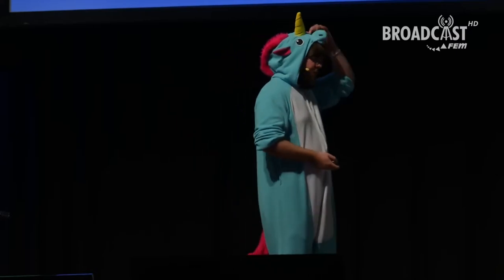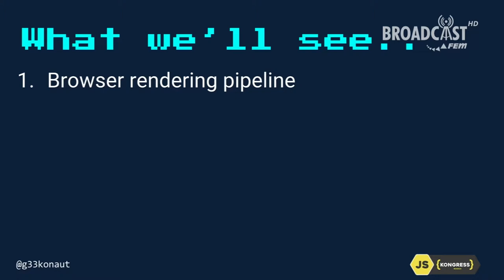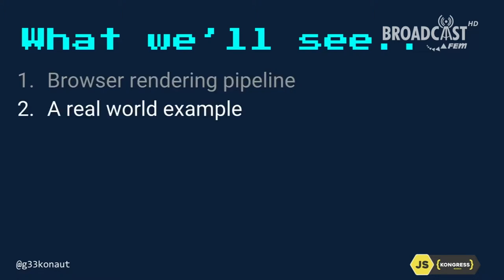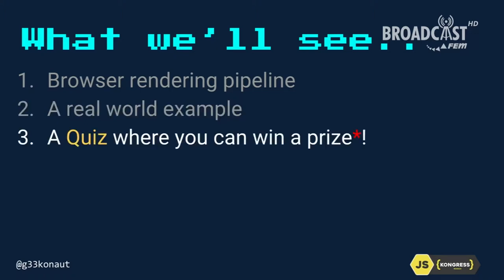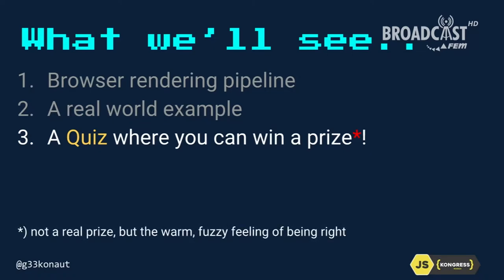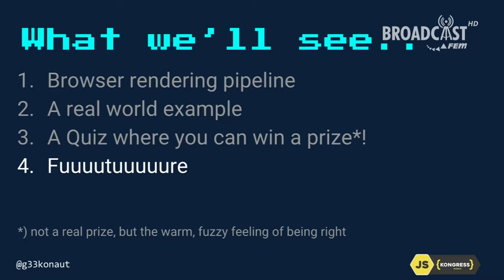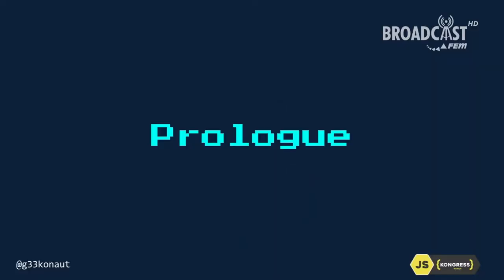Today I'm not going to talk about VR and AR. Today I'm going to talk about the browser rendering pipeline, using a real-world-ish example to show how rendering performance can be a problem and how we can make things better. Then there's a bit of a quiz where you can win a prize, and then we'll have a look at the future. To understand rendering performance, we have to understand rendering — and I think one way to start is with pixels.